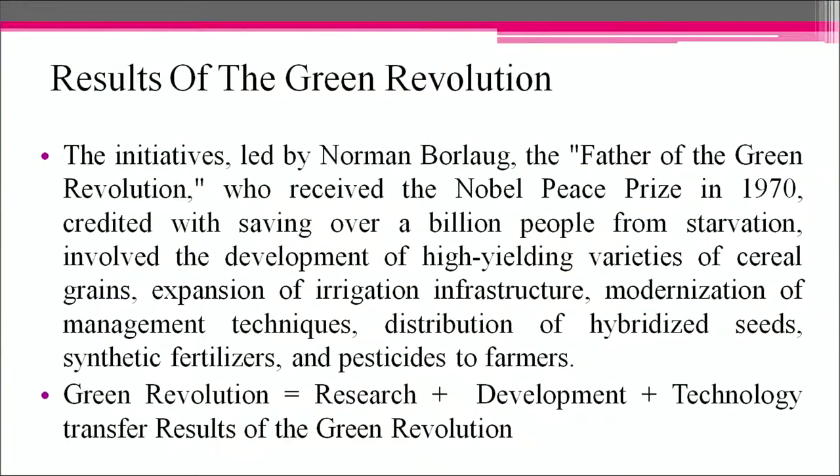The initiative led by Norman Borlaug, the father of the green revolution, who received the Nobel Peace Prize in 1970 and was credited with saving over a billion people from starvation, involved the development of high yielding varieties of cereal grains, expansion of irrigation infrastructure, modernization of management techniques, distribution of hybridized seeds, synthetic fertilizers and pesticides to farmers. In summary, the green revolution represents research plus development plus technology transfer.